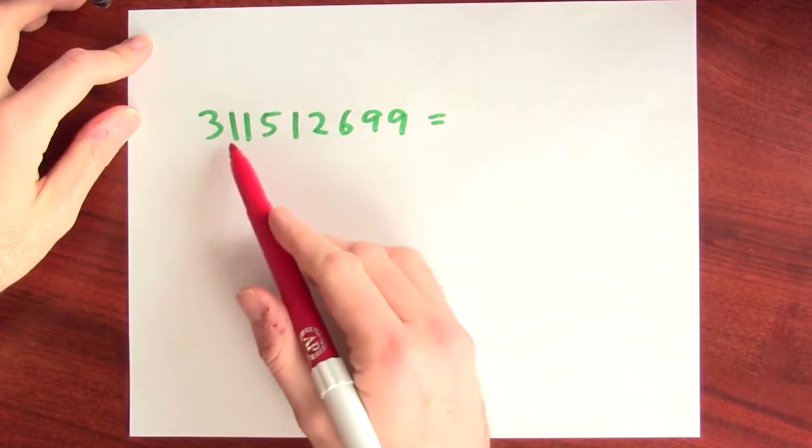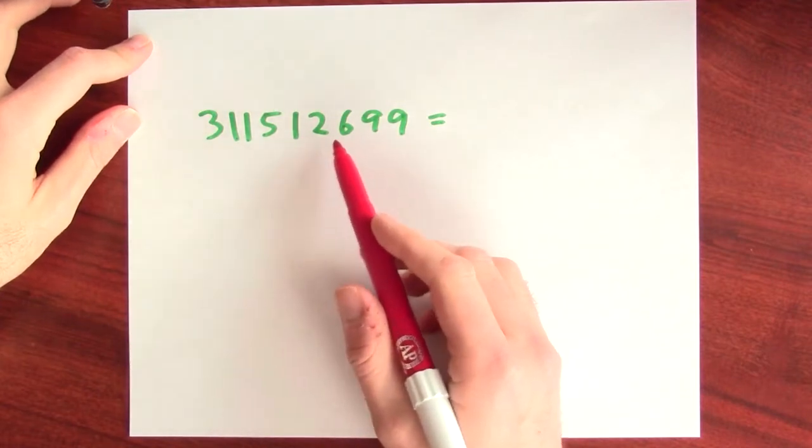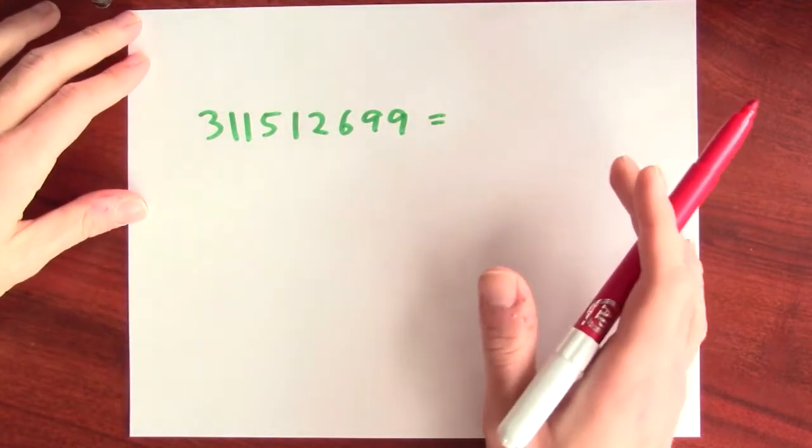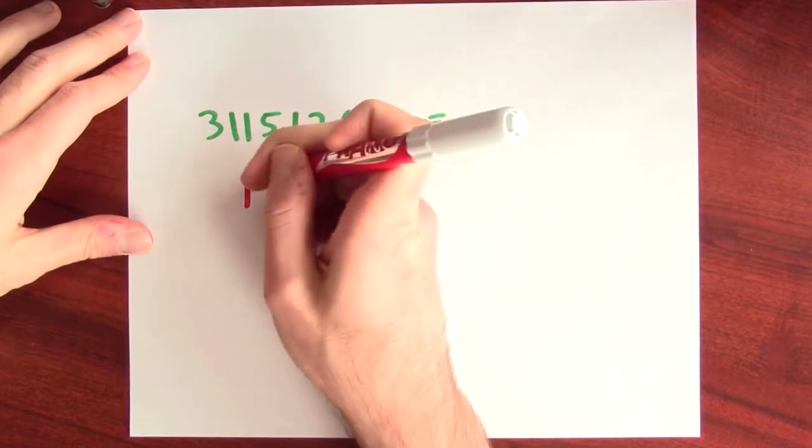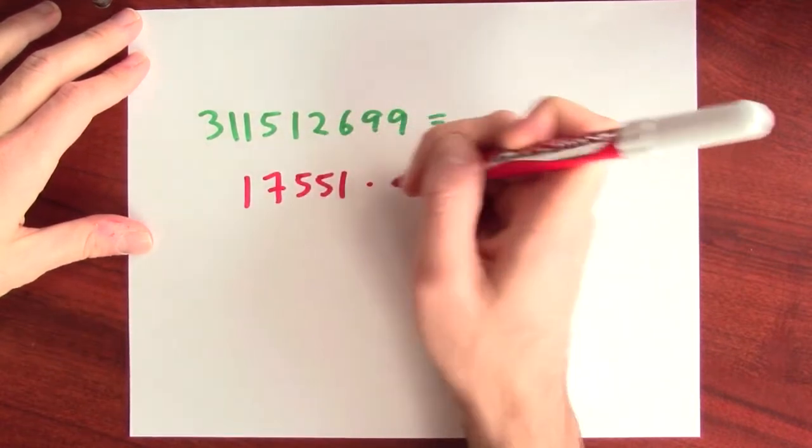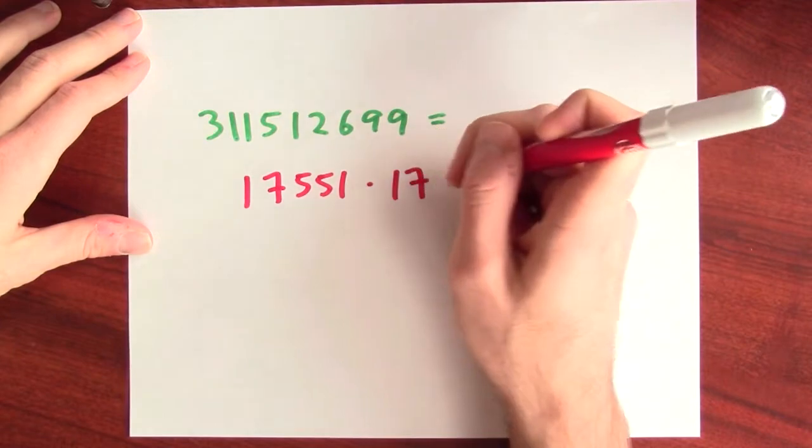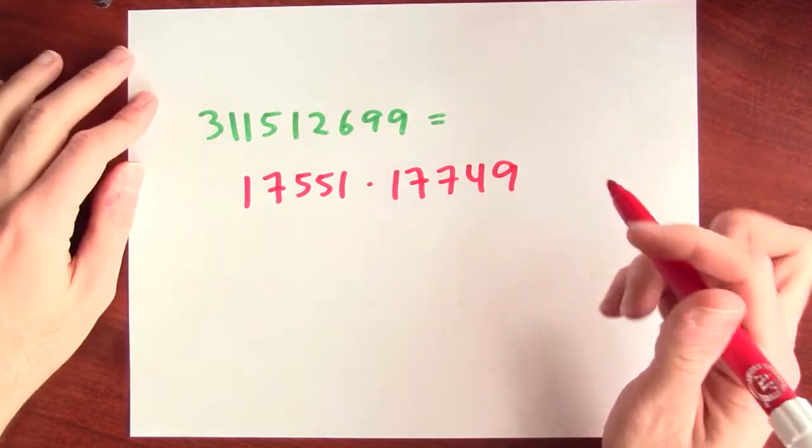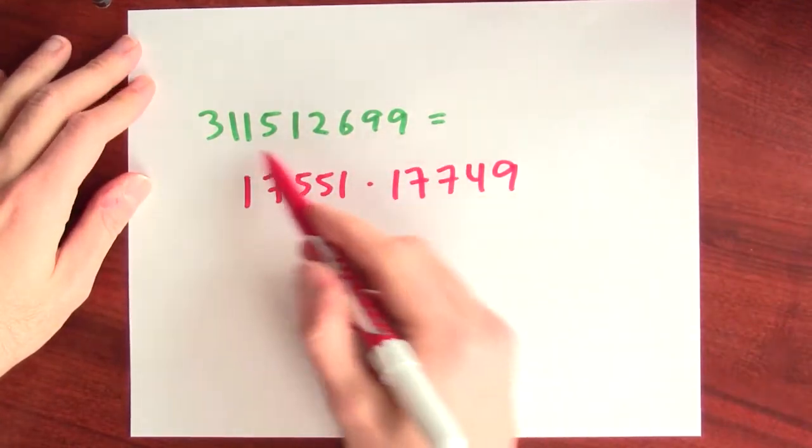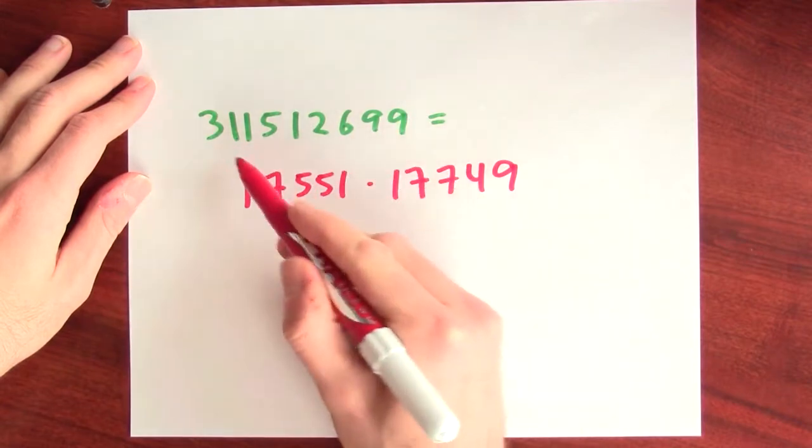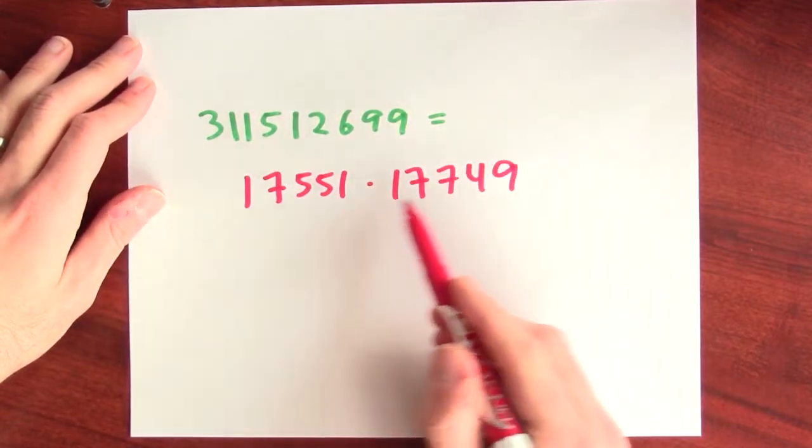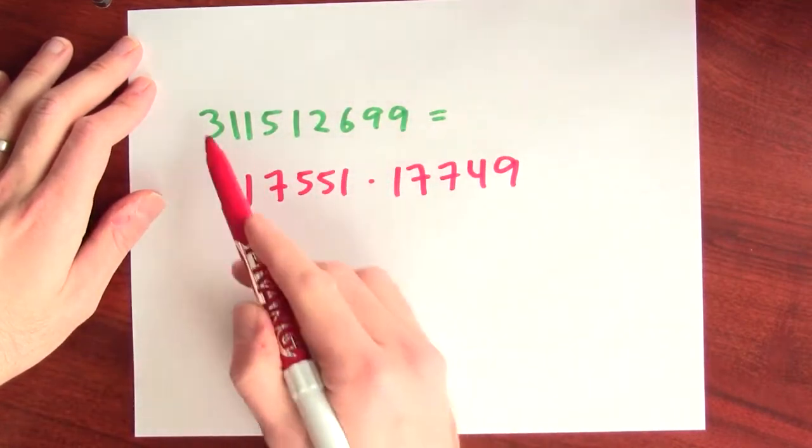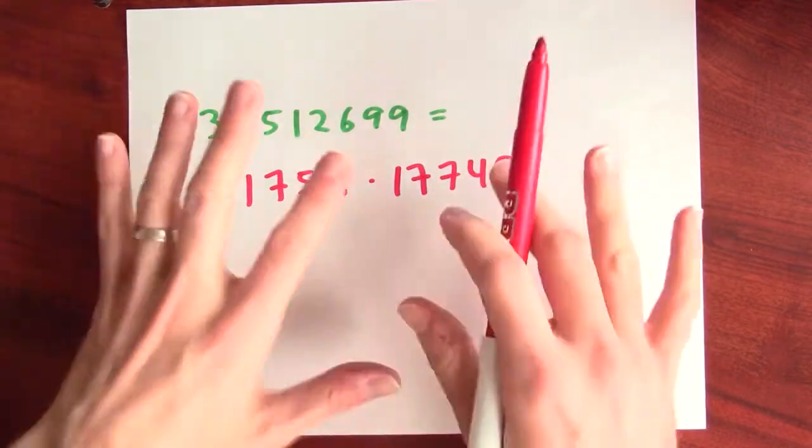You know, take a look at this number, 311,512,699. I mean, it turns out that this number is the product of two other whole numbers. It turns out this is 17,551 times 17,749. But how would you ever have known that? It would have been a real pain to do a bunch of tests to see which numbers divide this number. And since these two numbers are prime, there's no other smaller numbers that go into this number evenly. So it would have been a ton of work.